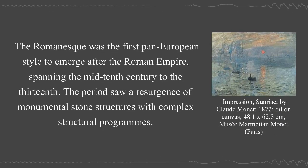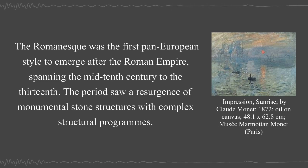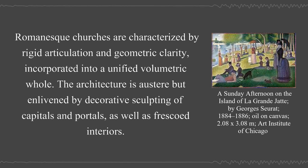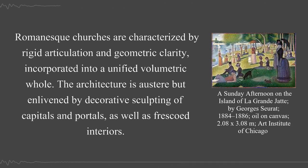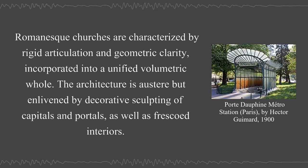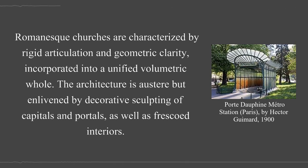The Romanesque was the first pan-European style to emerge after the Roman Empire, spanning the mid-10th century to the 13th. The period saw a resurgence of monumental stone structures with complex structural programs. Romanesque churches are characterized by rigid articulation and geometric clarity, incorporated into a unified volumetric whole. The architecture is austere, but enlivened by decorative sculpting of capitals and portals, as well as frescoed interiors.